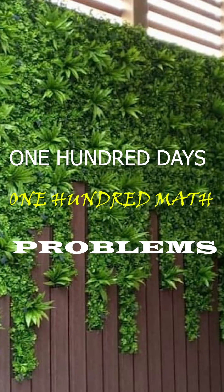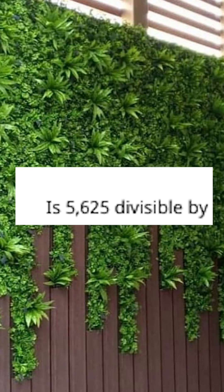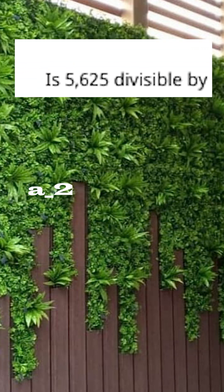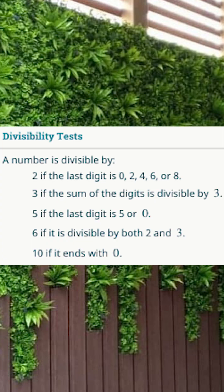So I've got this math problem that says: is 5625 divisible by (a) 2, (b) 3, (c) 5 or 10, (d) 6? Let's look at the properties we know about these numbers.